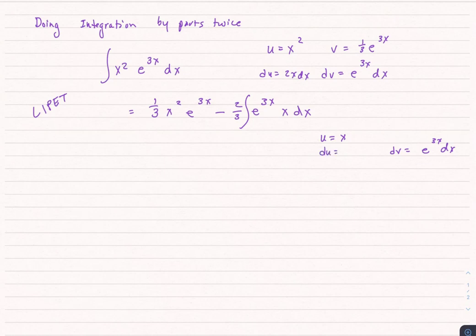The du, again, like our previous example, is just dx and v is identical to last time, which is 1 third e to the 3x.